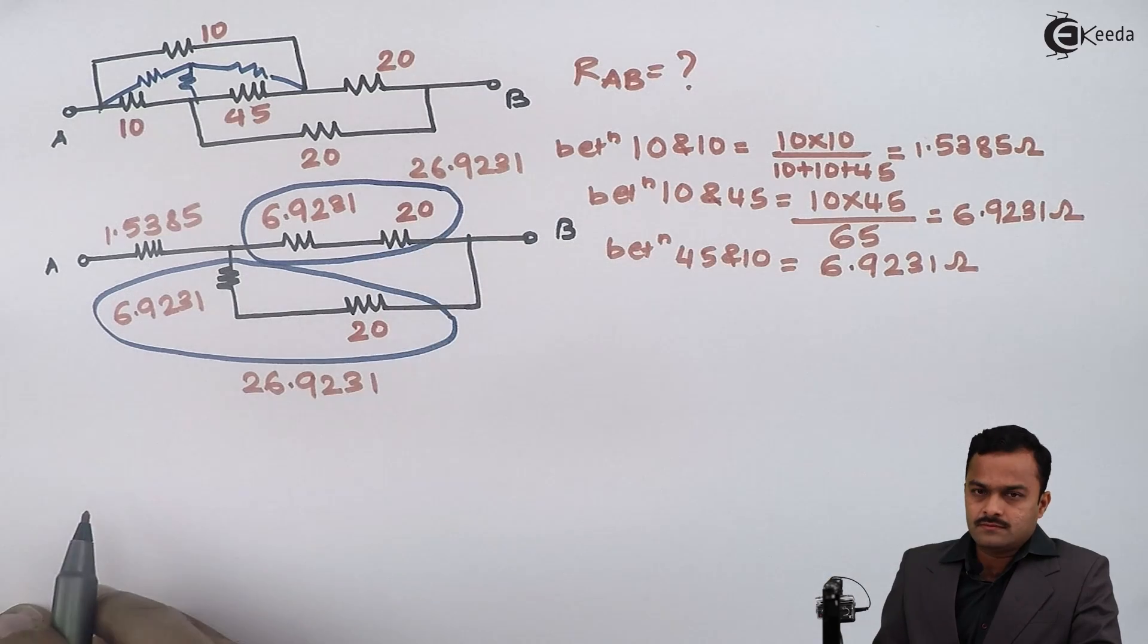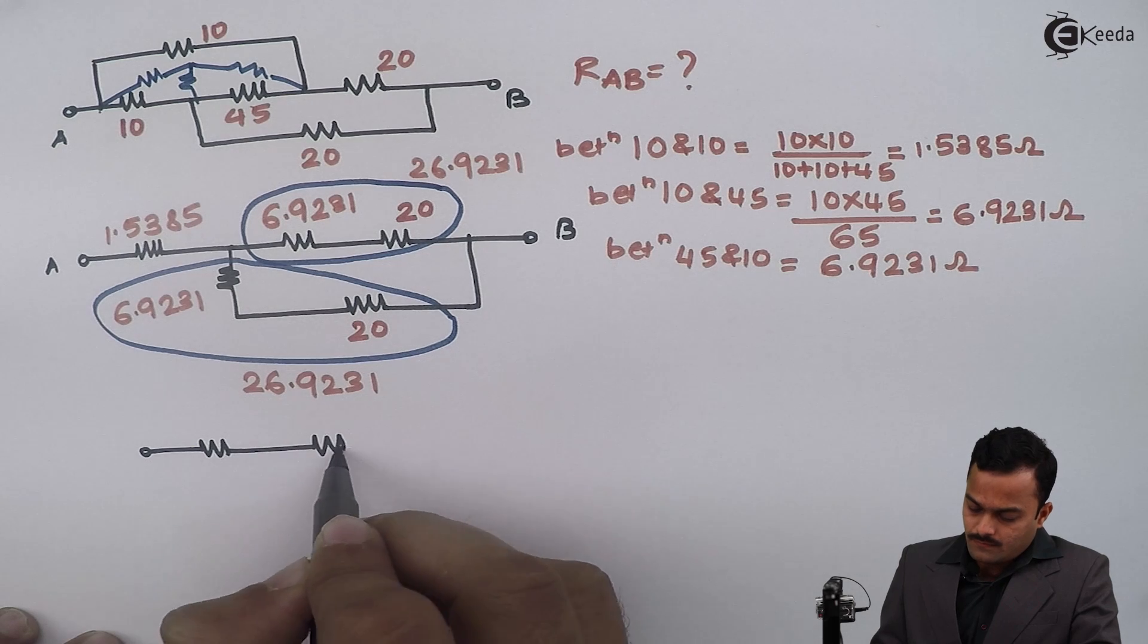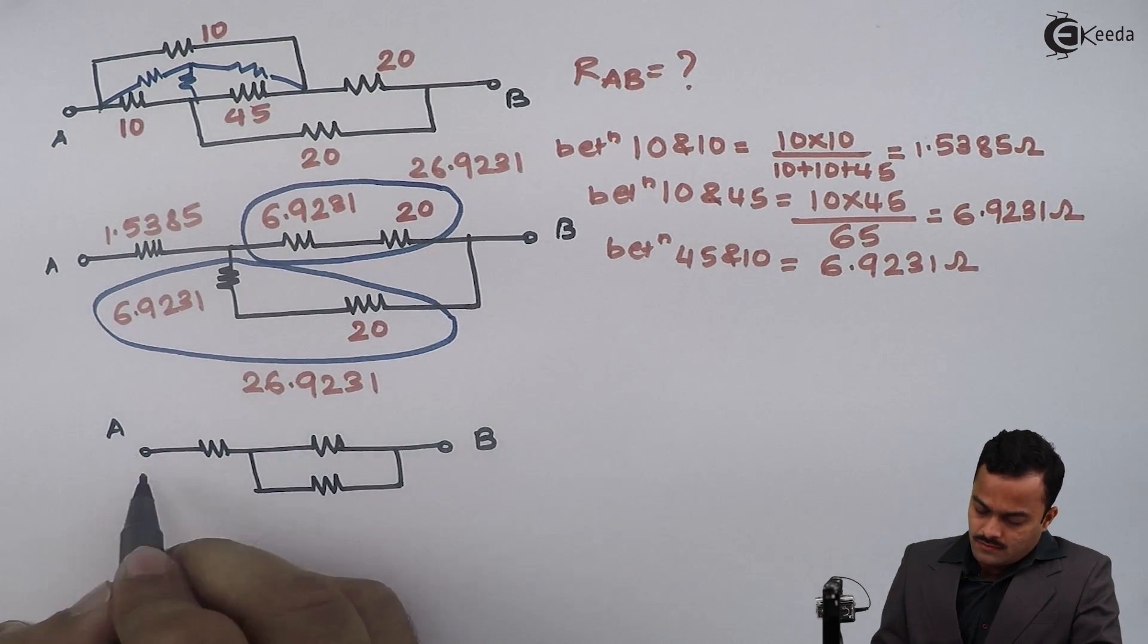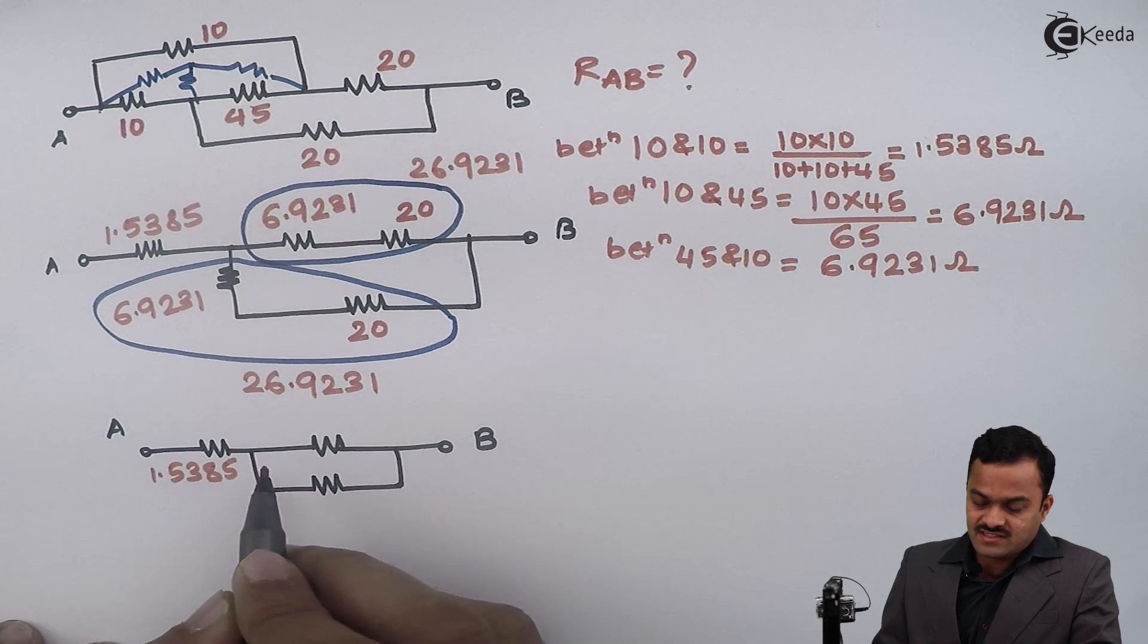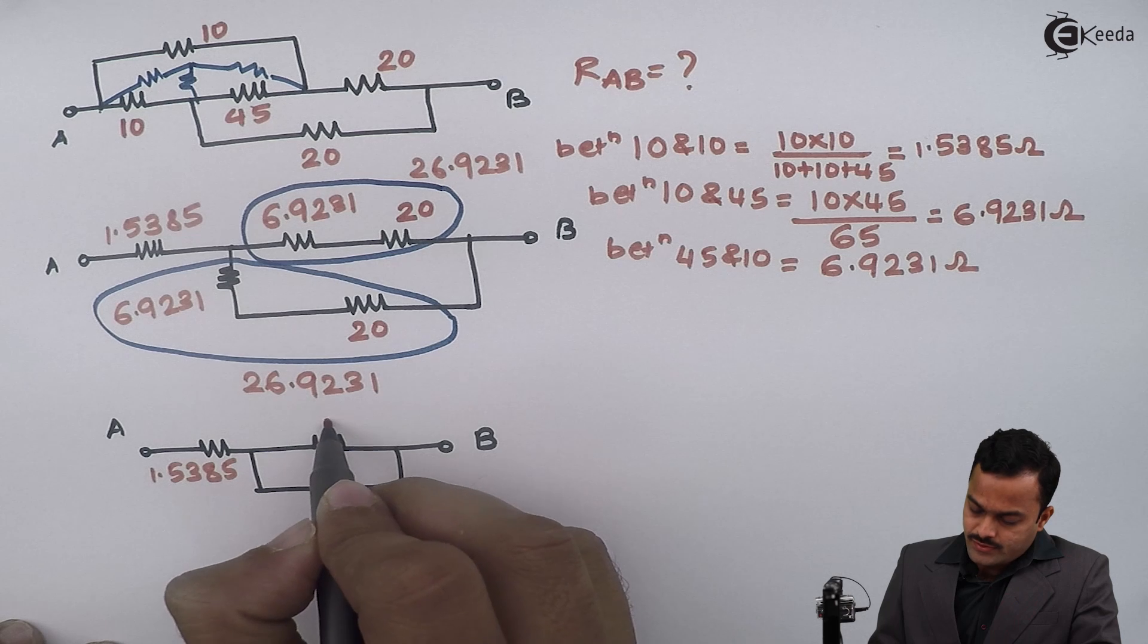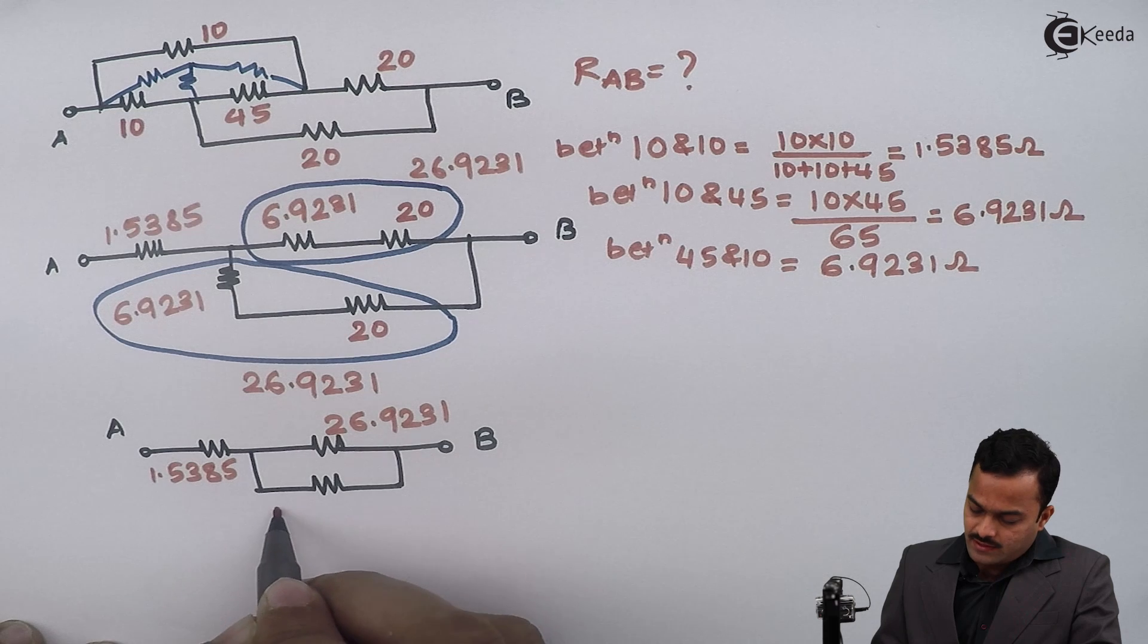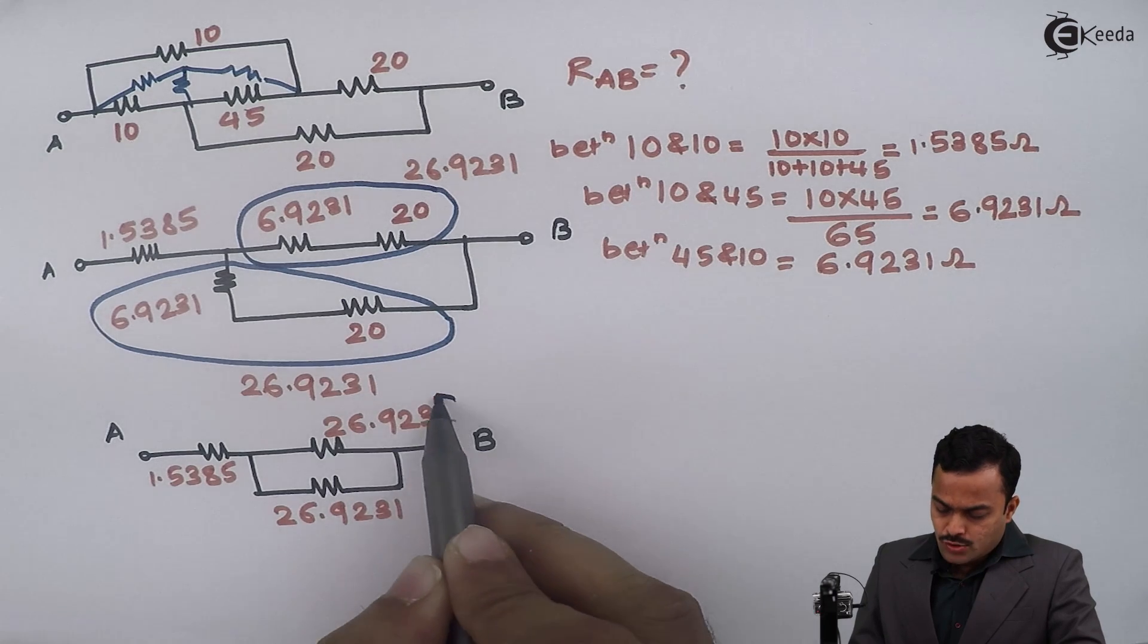Let's redraw the circuit. The circuit will look like this. 1.5385 will remain as it is because we have not touched that. This will reduce into one resistor, 26.9231. Same way over here, 26.9231. And then these two resistors are in parallel, so the equivalent is